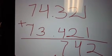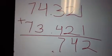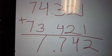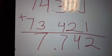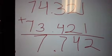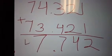You place your decimal. 4 plus 3 which is 7. And 7 plus 7 which is 14.